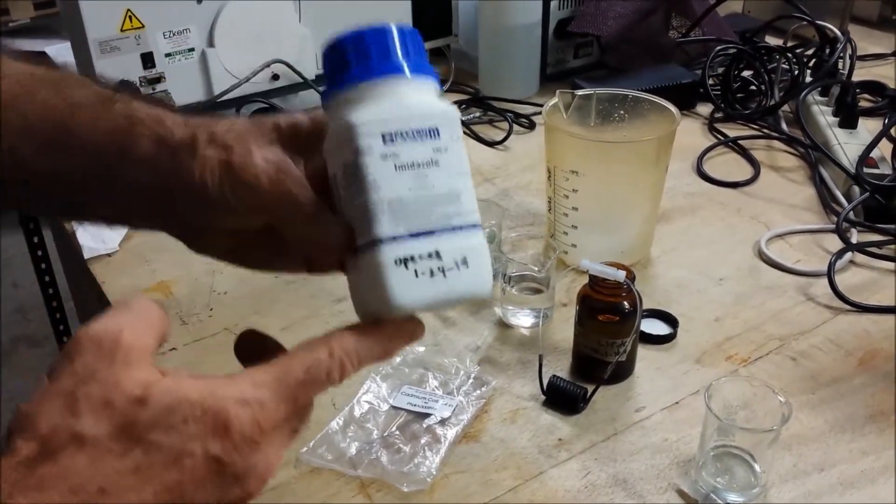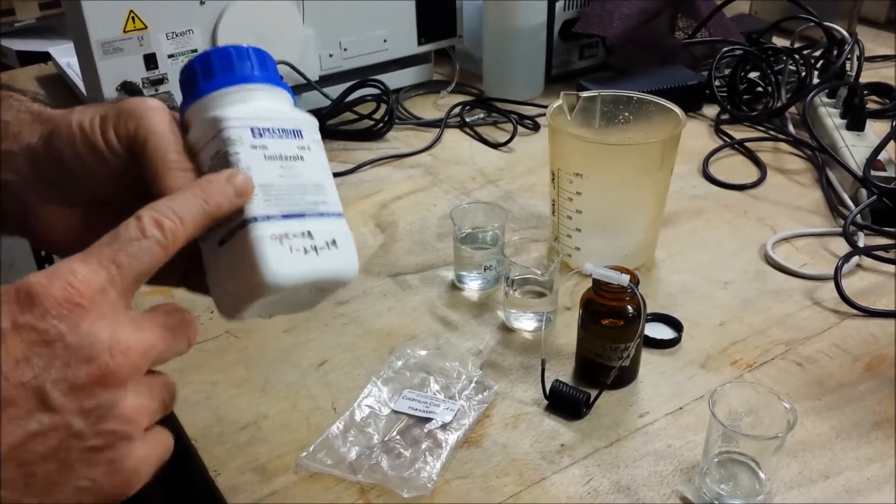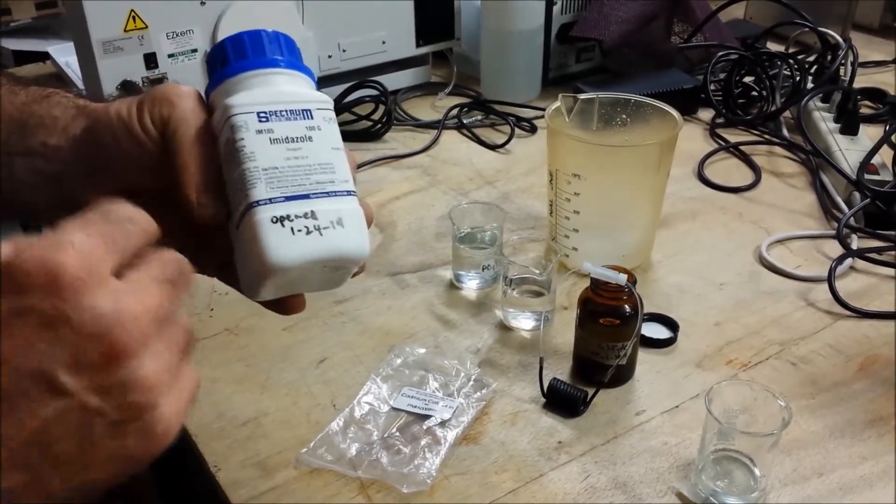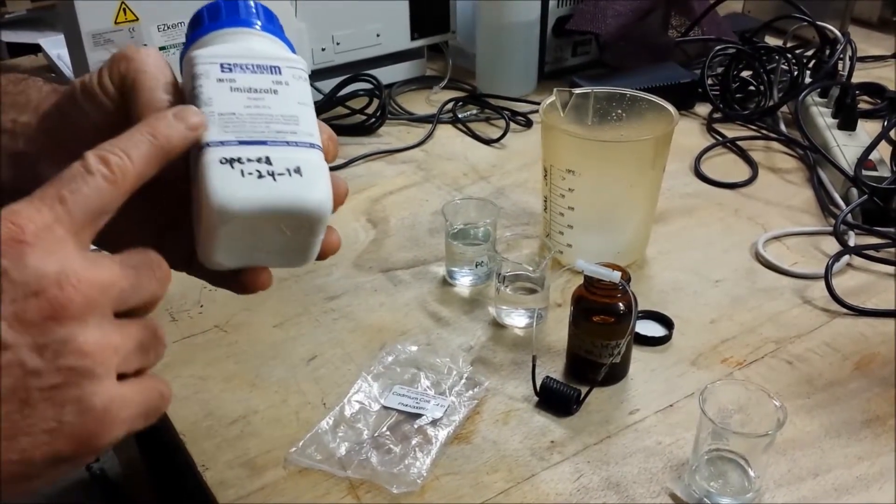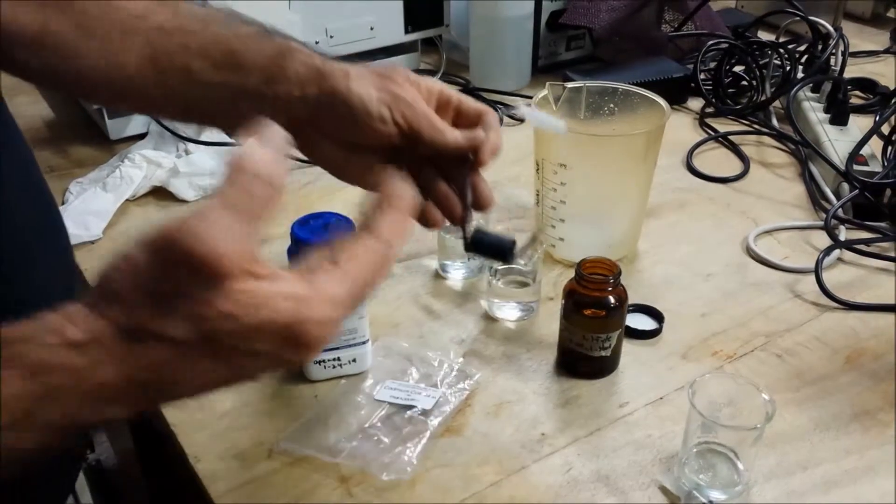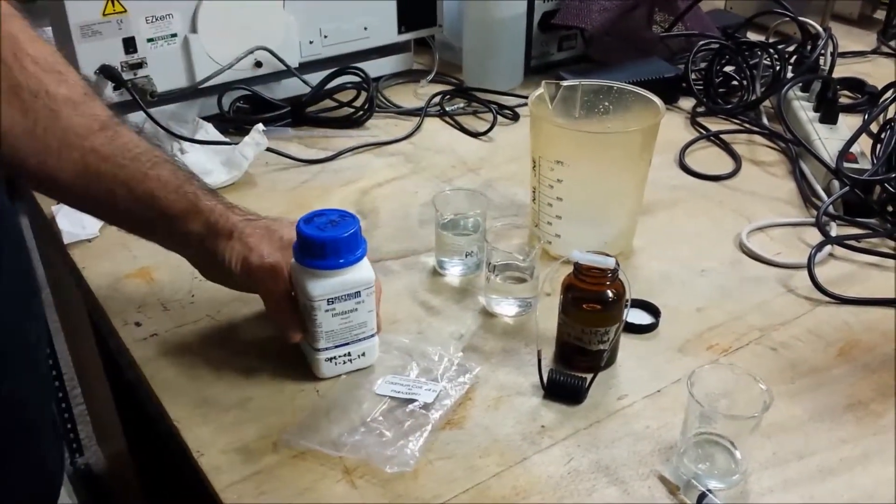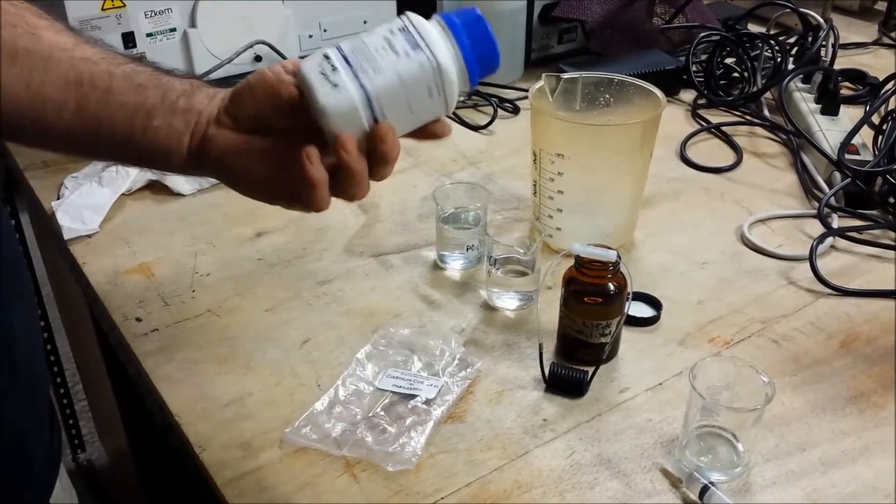One is using imidazole as the buffer instead of ammonium chloride. This is an approved replacement by the EPA for the buffer. It's a much better buffer because it has no chloride. Chloride can actually attack the cadmium and cause it to plaque up, and then the copper won't be able to stick to it.